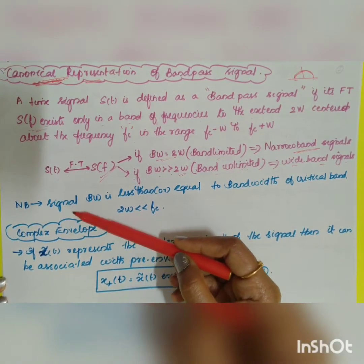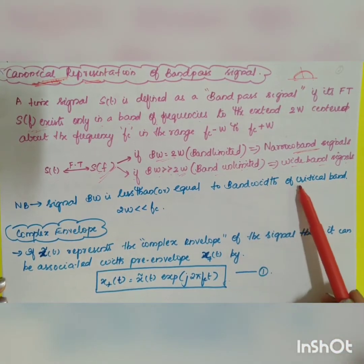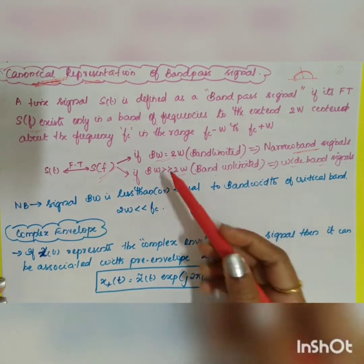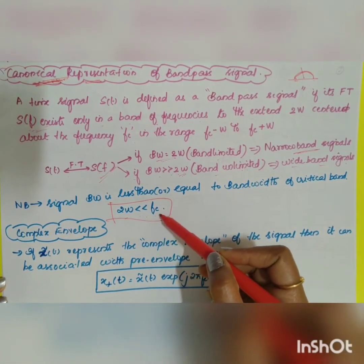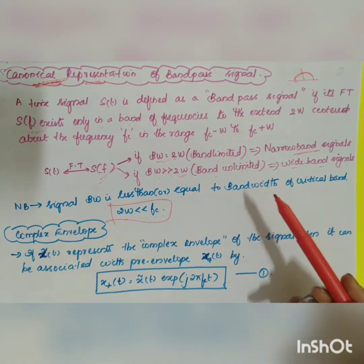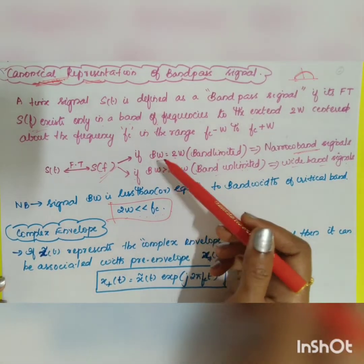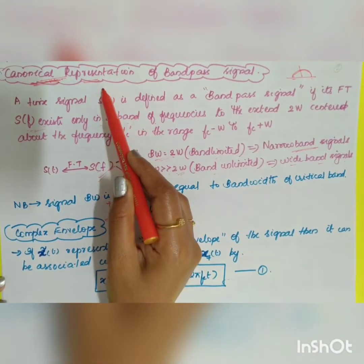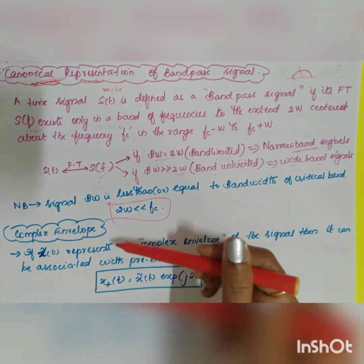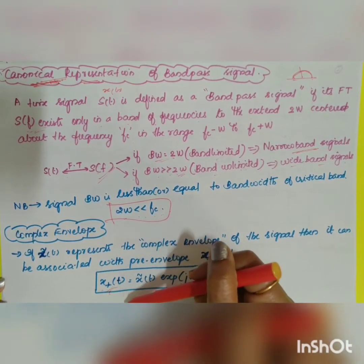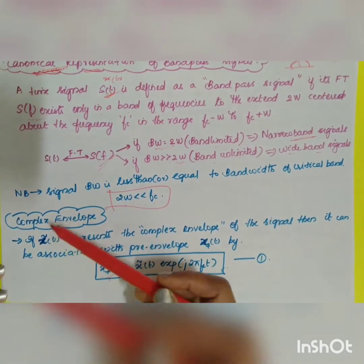If bandwidth is greater than 2W the signal is band-unlimited, called a wideband signal. For a narrowband signal, the signal bandwidth satisfies 2W ≤ fc. These are important points. Going forward, we use the notation x(t) instead of s(t), as in the equations derived earlier.